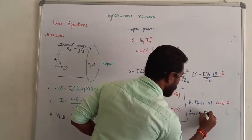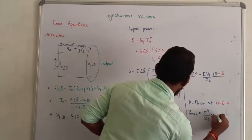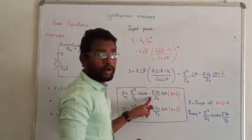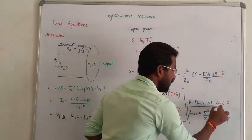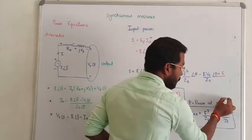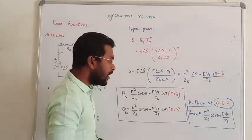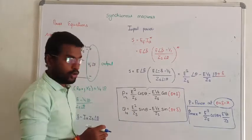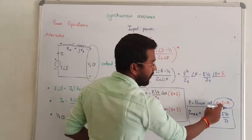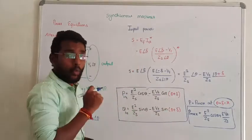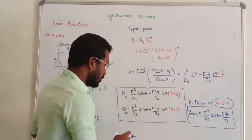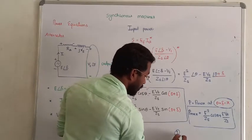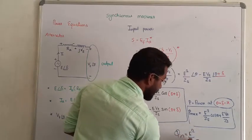So the maximum power formula is: P_max equals E squared upon Zs times cos(theta) plus E times Vt divided by Zs. The second term's minus-minus becomes plus. Additionally, since sine(pi) equals zero, the reactive power generated by the alternator when delivering maximum power becomes E squared by Zs times sine(theta).